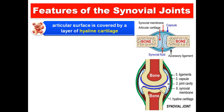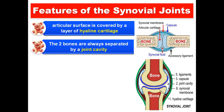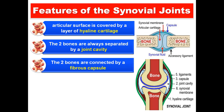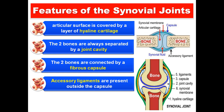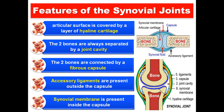In synovial joints, the articular surface is covered by hyaline cartilage, and there is always a cavity between the two bones — the joint cavity. The two bones are connected by a fibrous capsule. This fibrous capsule is supported from outside by accessory ligaments, and the fibrous capsule is lined from inside by a membrane called the synovial membrane.